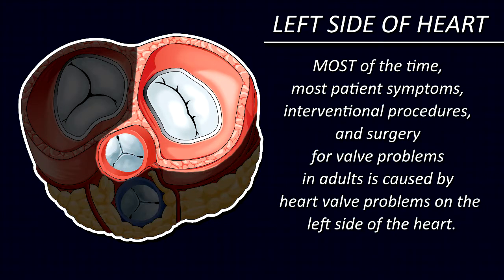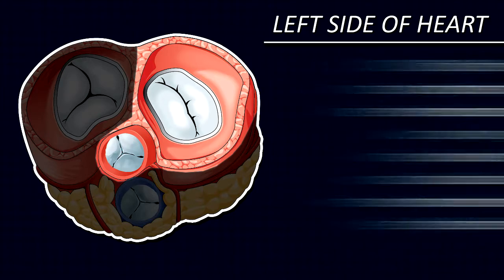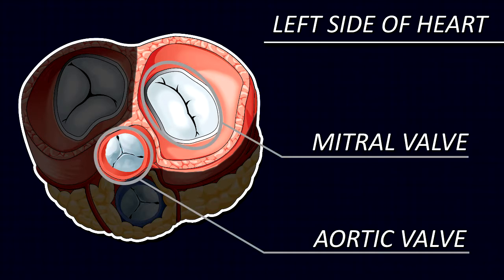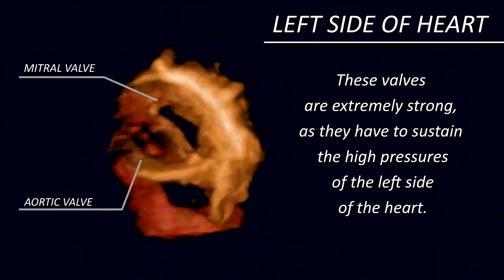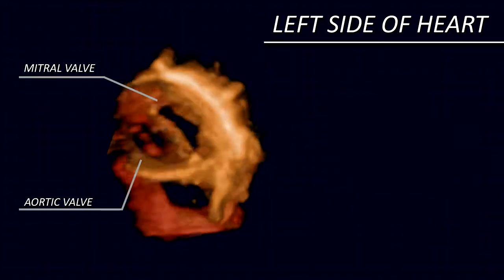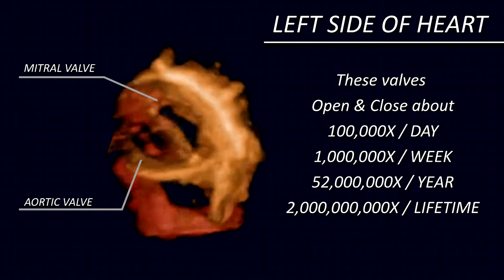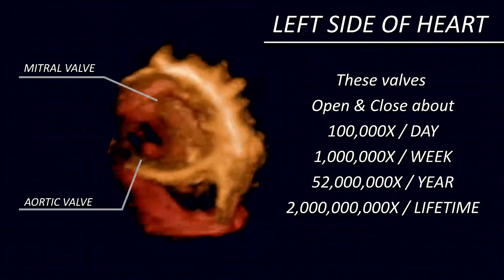Most patients' symptoms, interventional procedures, and surgery for valve problems in adults are caused by heart valve problems on the left side of the heart. The valves on the left side are called the mitral and aortic valves. While both are very thin and pliable, these valves are extremely strong, as they must sustain the high pressures of the left side of the heart and open and close about 100,000 times per day, nearly 1 million times per week, 52 million times per year, and over 2 billion times in a lifetime.